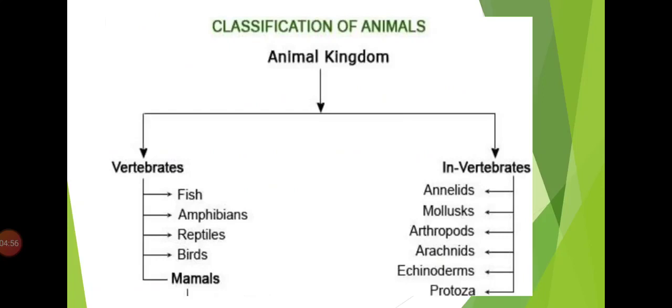So like in this animal kingdom classification, your topic number two is the animal kingdom. Here the animal kingdom is available. Animal kingdom: animals are divided into two major groups, vertebrates and invertebrates. Those animals that have a spinal column, they are divided into five groups: fish, amphibians, reptiles, birds, and mammals.